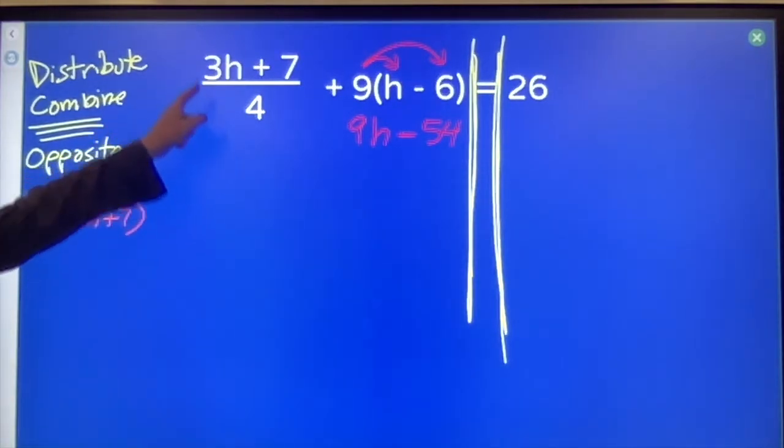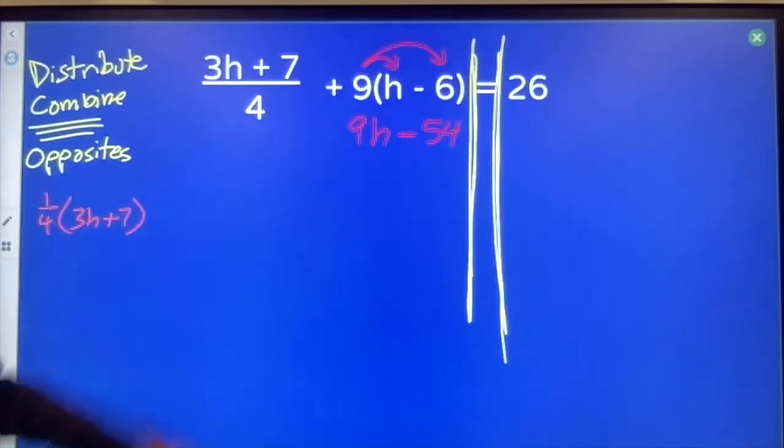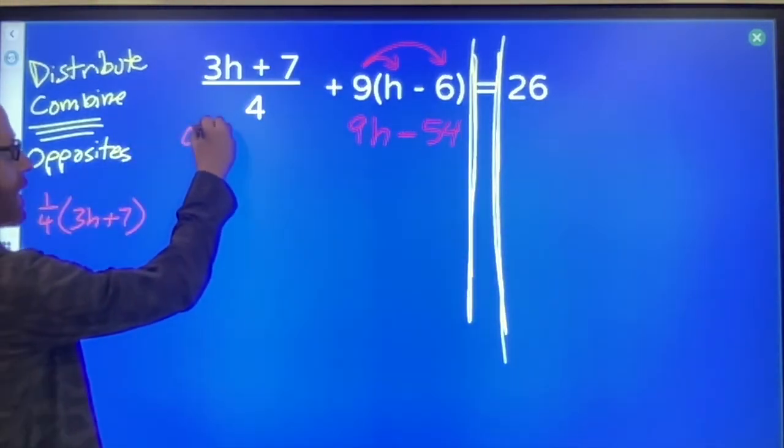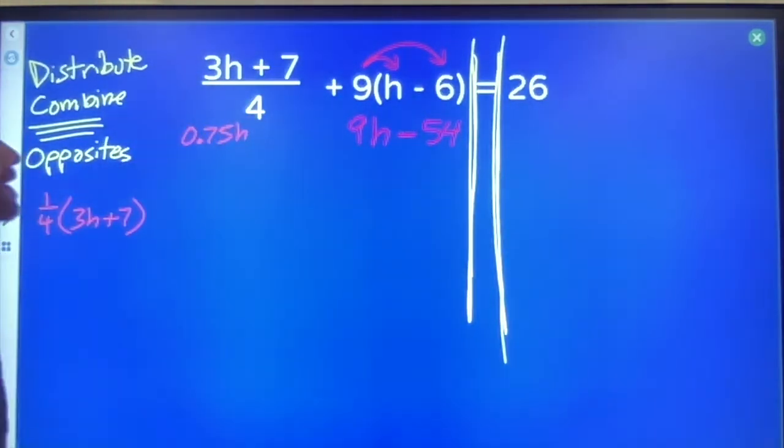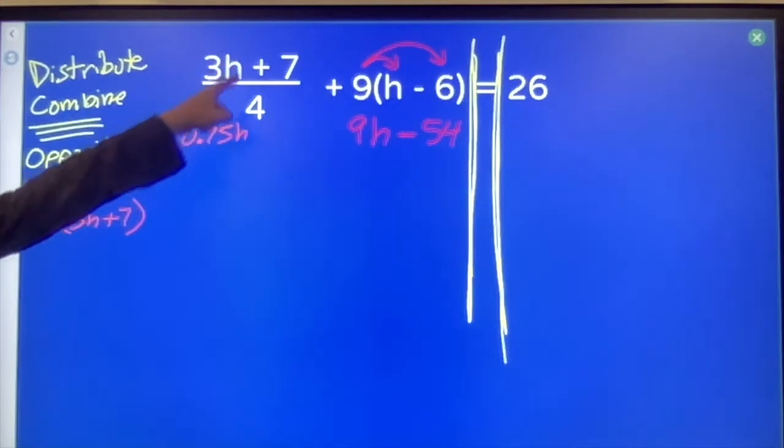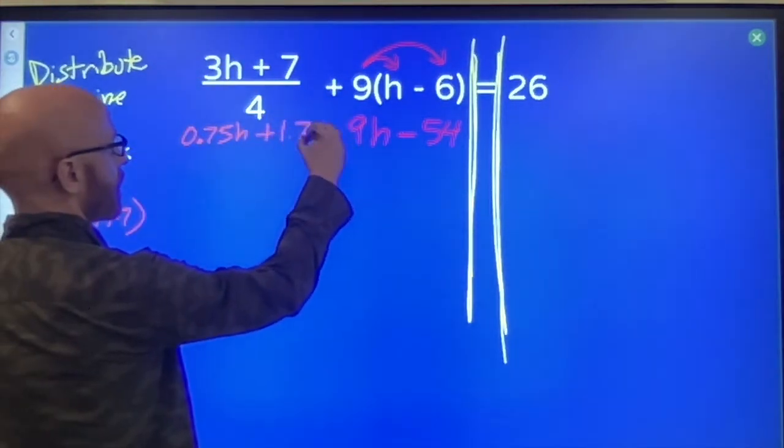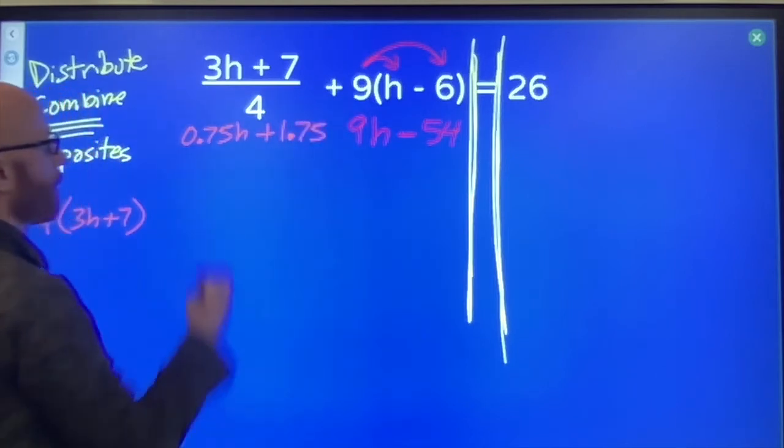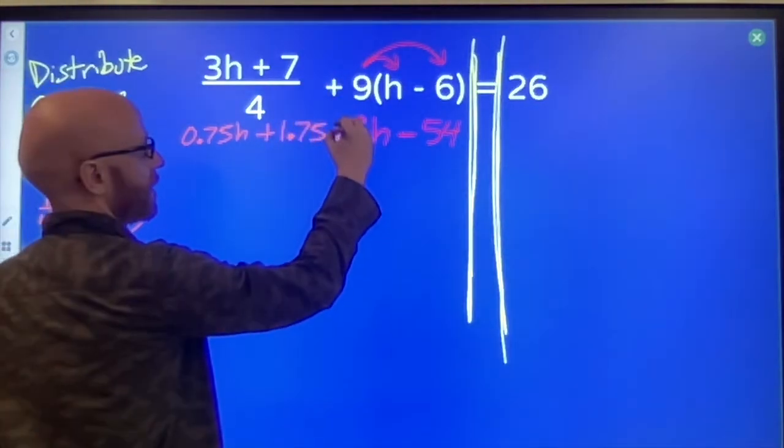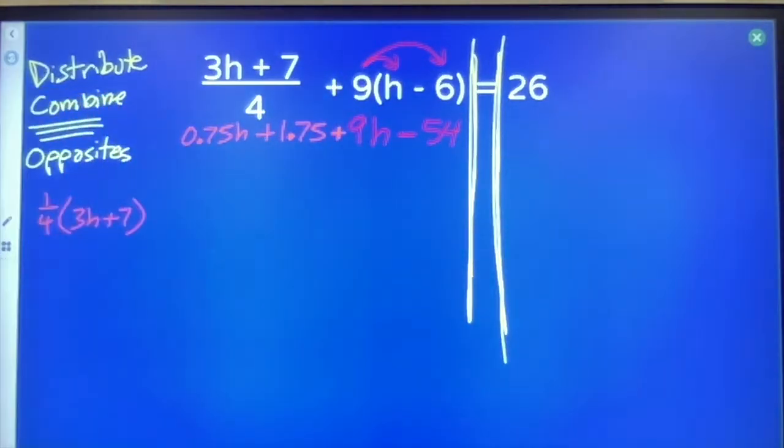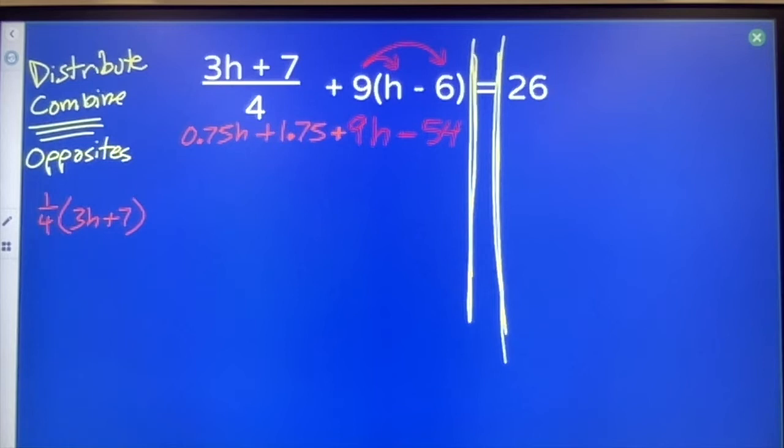This four, divide by four, is being applied to the three. We've got 0.75 h's, and it's also being applied to the seven plus 1.75 plus sign here. And that's distributing to get rid of parentheses, get rid of fraction bars.